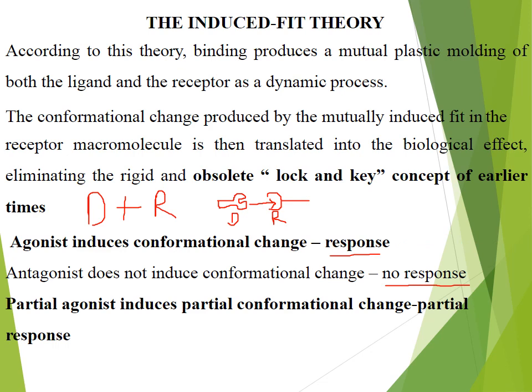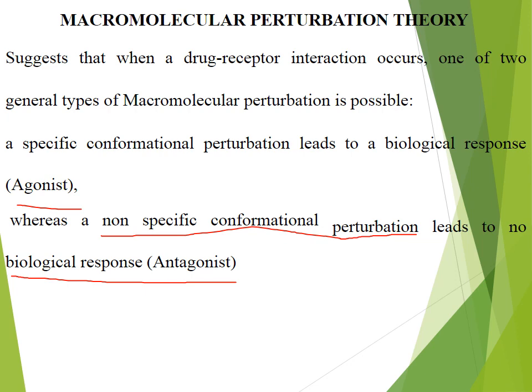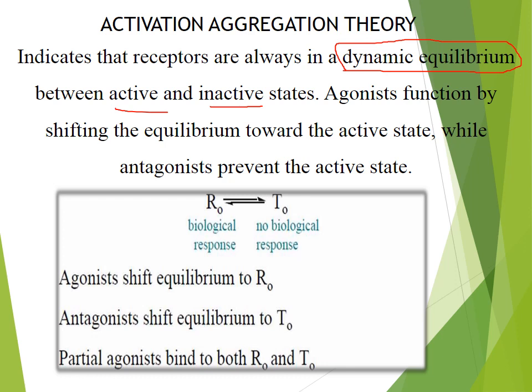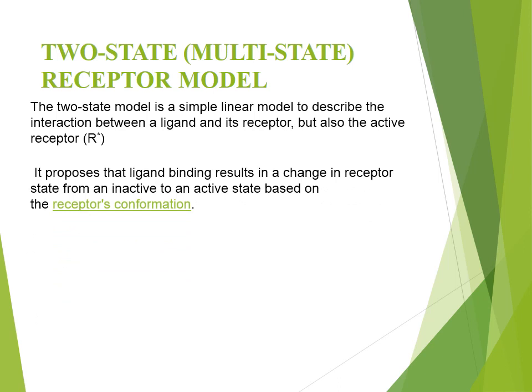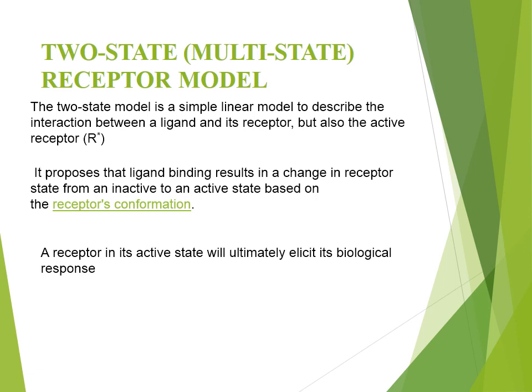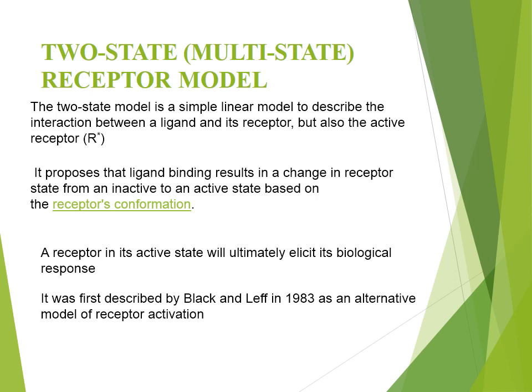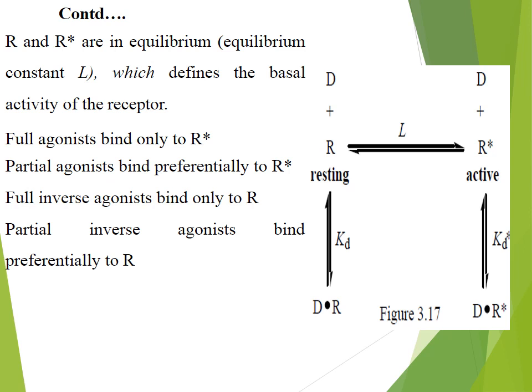In the induced fit theory, binding of an agonist causes conformational changes in the receptor. In the two-state model of receptor activation, the receptor exists in a dynamic equilibrium between a resting state (R) and an active state (R*). A full agonist will bind only to R* (the active state), whereas an inverse agonist will bind only to R (the resting state). This model was first described by Black and Leff in 1983 as an alternative model of receptor activation.